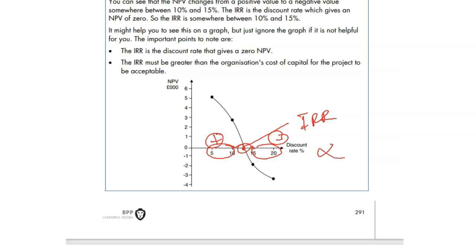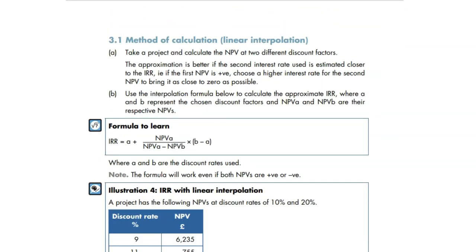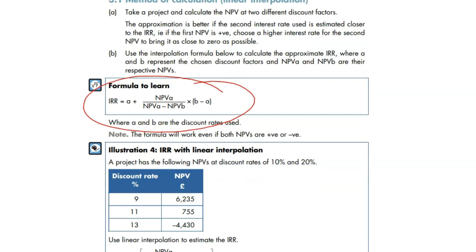It doesn't come in the exam. What comes is here. You need to learn a formula, an IRR formula. We call it positive percentage plus positive NPV divided by negative NPV minus negative NPV times by negative percentage minus positive percentage. I have said so many things. Let's go one more time.